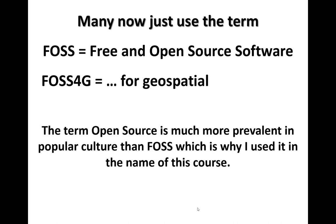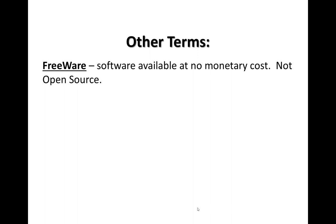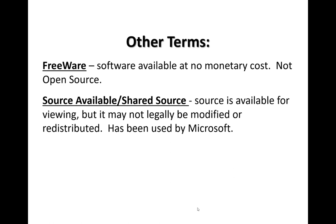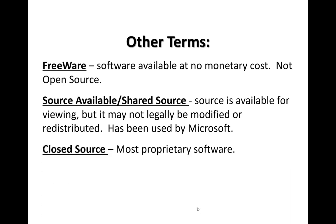The term open source seems much more prevalent in popular culture than free software, which is why it's used in the course name. You'll also see related terms: freeware, which is software available at no monetary cost but doesn't mean you have access to the source code; source available or shared source, where the source code can be viewed but not modified or redistributed — used by Microsoft and others; and closed source, which is proprietary software such as ArcGIS and Microsoft Word.